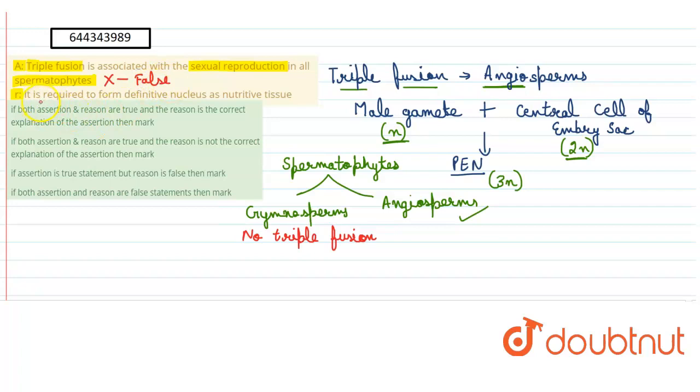Now coming to the reason. Reason says that it is required to form definitive nucleus as nutritive tissue. The nucleus of the central cell is called as definitive nucleus, and it is saying that it is required to form definitive nucleus as nutritive tissue.